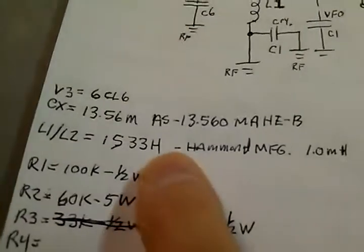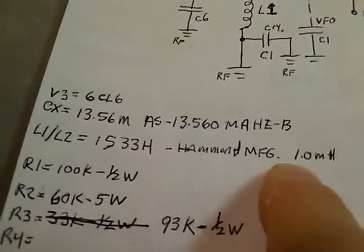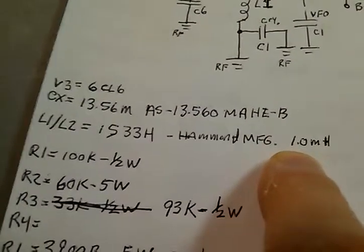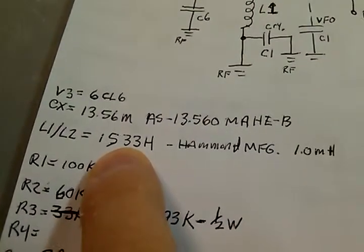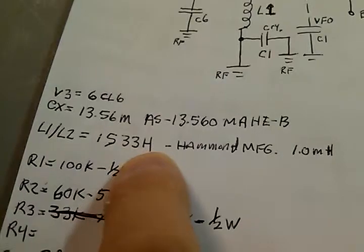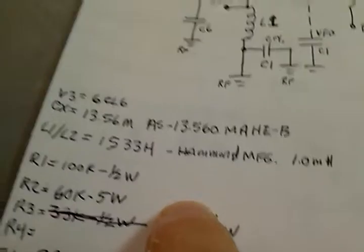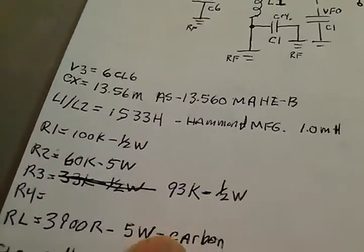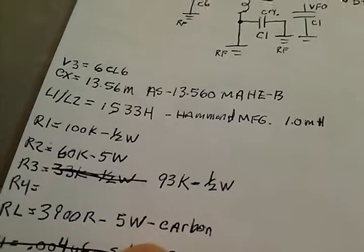The radio frequency chokes, these were Hammond 1.0 millihenry, which is exactly what they had on their stuff. It was the 1533H. Got these from Allied, had to back order, took a couple weeks, but they're fairly cheap. You can get them all over the internet.